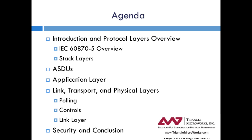It also dives into the stack layers, particularly with regards to 60870-5-101 and -104. The second video goes into detail about ASDUs, or Application Specific Data Units. The third video describes the application layer. The fourth video discusses the link, transport, and physical layers, diving into more detail about polling, controls, and the link layer in general. And the fifth and final video describes security in 60870-5 and provides the conclusion.